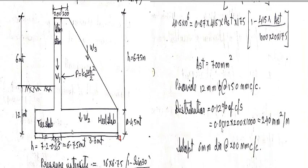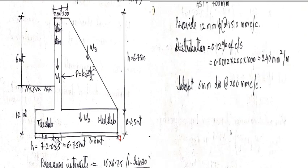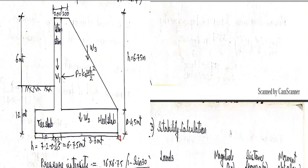So providing 12 mm diameter at 150 mm center to center. Distribution bars of 0.12% of cross section. So this will be 0.0012 into 200 into 1000 which is 240 mm square per meter. So adopt 6 mm diameter at 111 center to center.